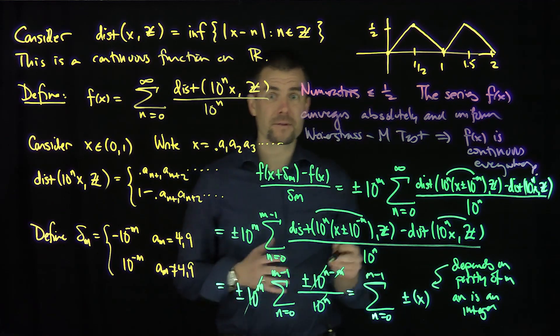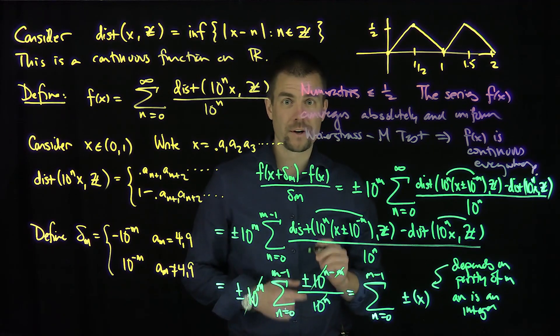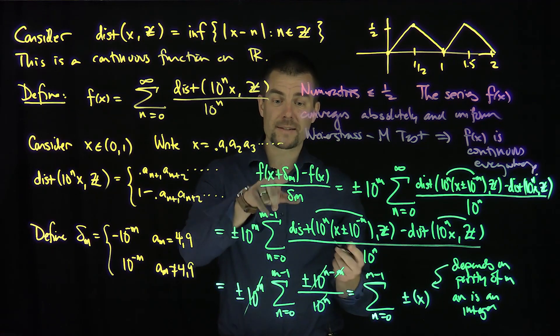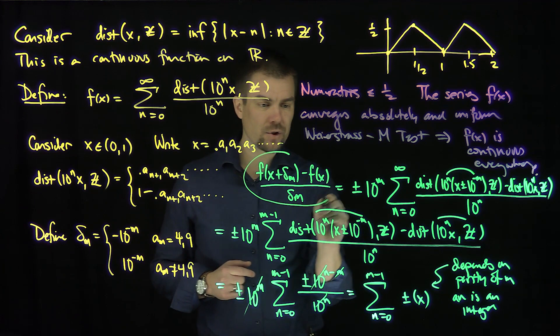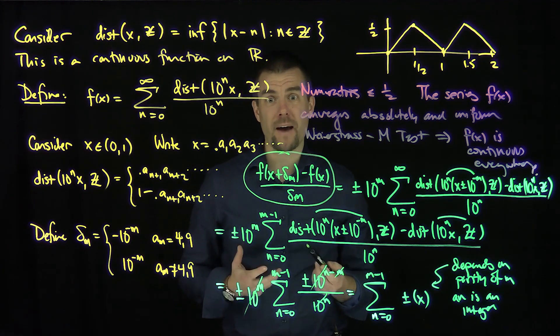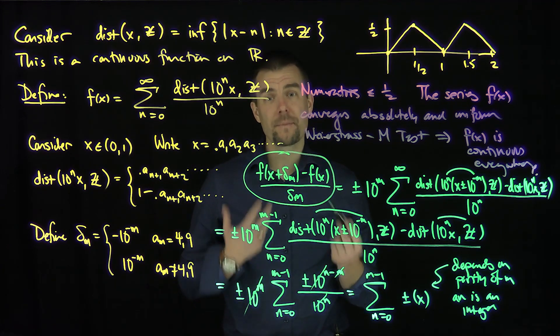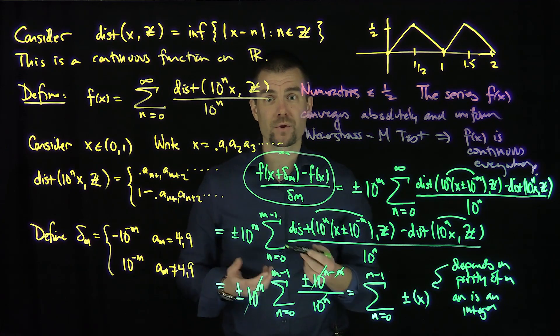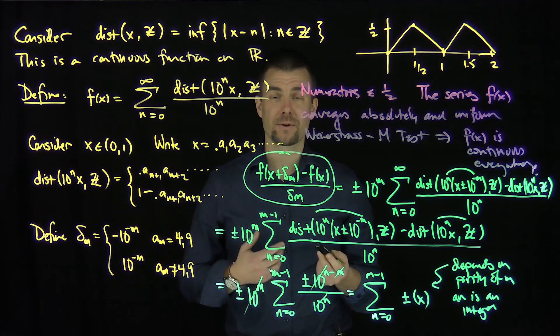So for infinitely many values of m, this expression over here will be an integer, which says that as m goes to infinity, this difference quotient for infinitely many values of m will be an integer. Therefore, the limit as m goes to infinity of this difference quotient does not exist for any x in (0,1).